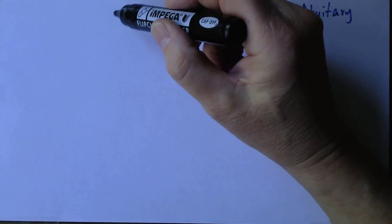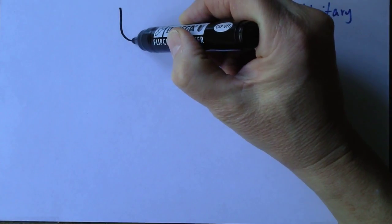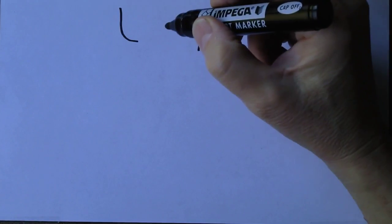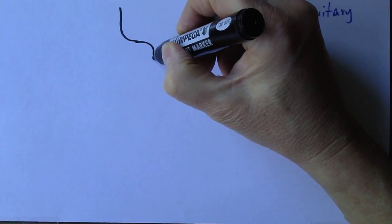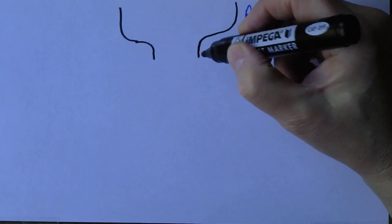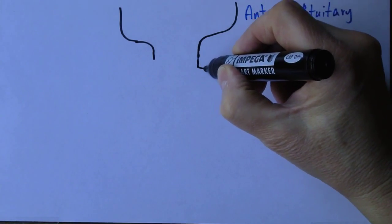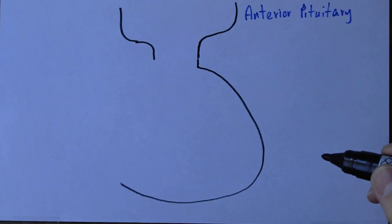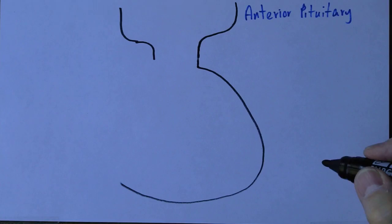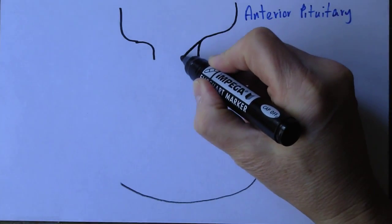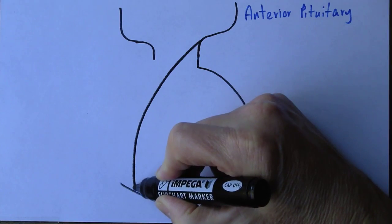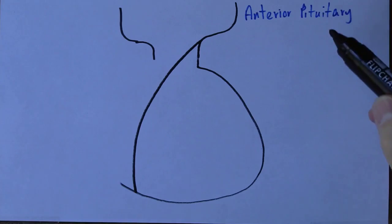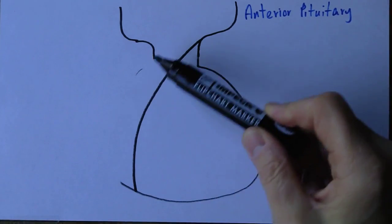The pituitary gland is associated with the hypothalamus in the brain and sits on a stalk, sometimes called the infundibulum. Here we have the large anterior lobe of the pituitary gland — the anterior lobe is the larger of the two lobes. I'm not going to draw the posterior lobe on this diagram because we're focusing on the anterior, but it would be here towards the back.